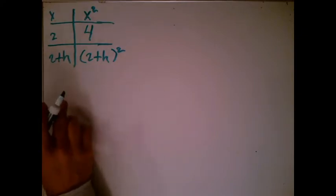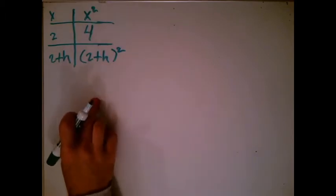2 plus h, so that's 2 plus a small number. We take the 2 plus h, we plug it into x squared, we get (2 plus h) squared.